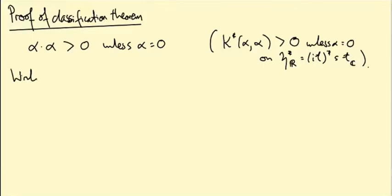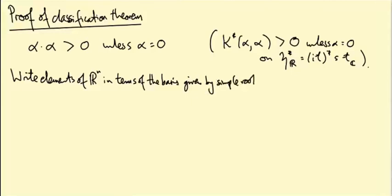Well, I'm going to write elements of RN or more accurately elements of H star R in terms of the basis given by the simple roots. Remember, what we proved in the last video is if I picked a hyperplane of a rational slope, then the corresponding set of simple roots form a basis for RN. There are N of them and they're linearly independent. So in other words, we're going to write elements of RN as vectors. V equals V1 down to VN. And what this means is it's sum of VI alpha I, where the alpha I, alpha one up to alpha N are the positive, the simple roots.